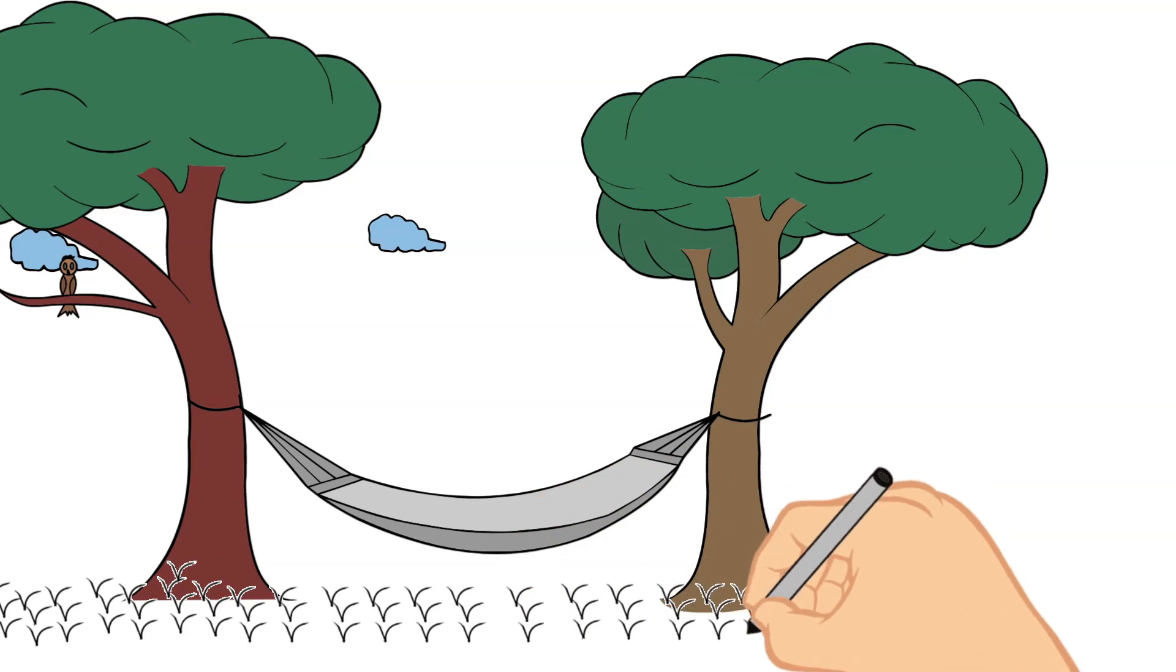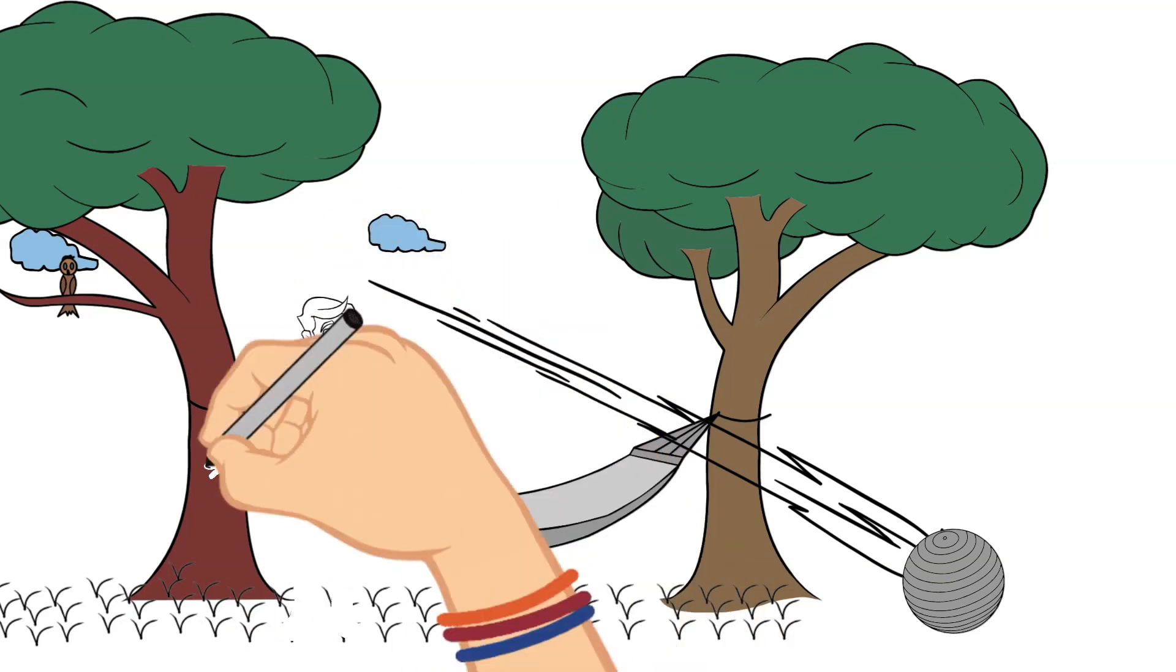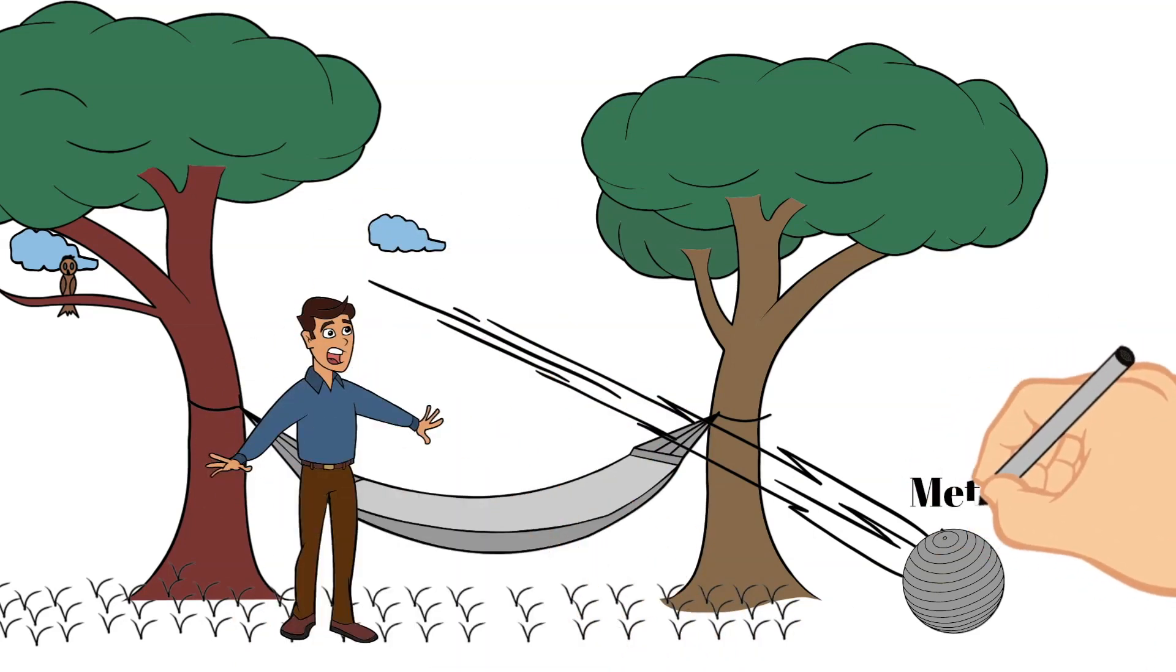Typically, meteors smaller than a football field will break apart in Earth's atmosphere, but occasionally about 5% of the original object can make it to the ground.